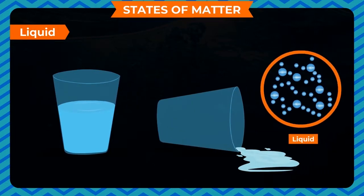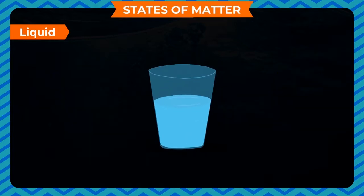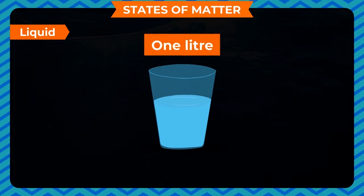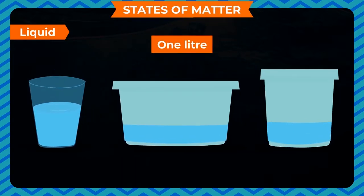In liquids, the molecules are loosely packed and have space between them. The molecules can move around a little freely. Liquids have a fixed volume — 1 litre of water will remain 1 litre whether we pour it in a tub or in a bucket.